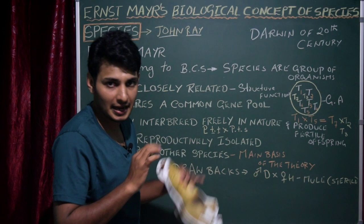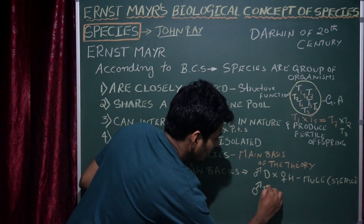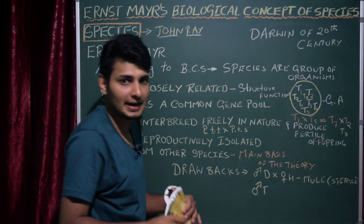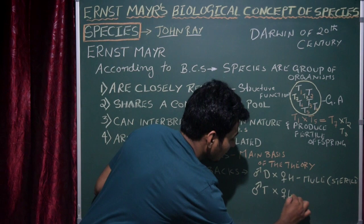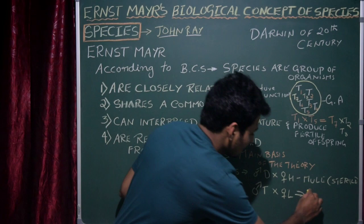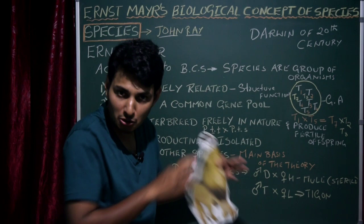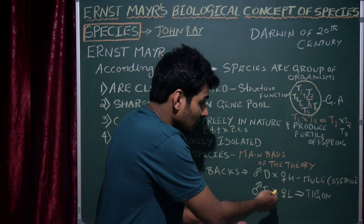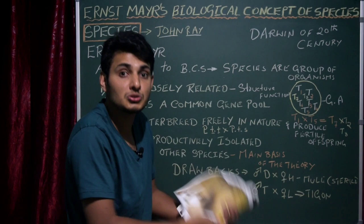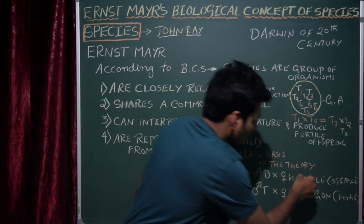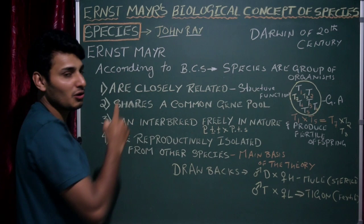Another example: under captivity in zoological parks, when a male tiger cannot find a female tiger, it mates with a lioness, producing offspring called a tigon. Unlike the mule which is sterile, the tigon is fertile — it can mate with a tiger or lion and produce offspring. These two examples disprove the biological concept of species.